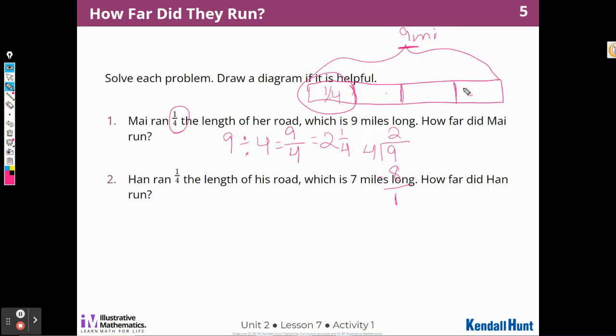So this would be 2 and a fourth. This would be 2 and a fourth. This would be 2 and a fourth. And this would be 2 and a fourth. So 1 fourth of what she ran was 2 and a fourth miles. And I would circle that so my teacher can see what that is. And then I showed all my work. I showed all my thinking.